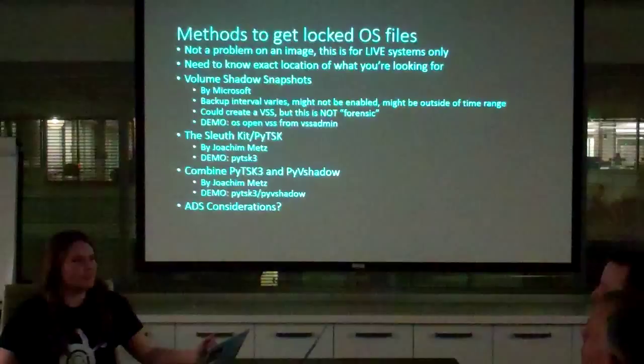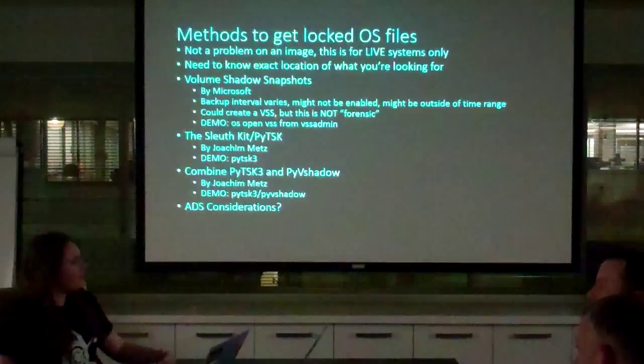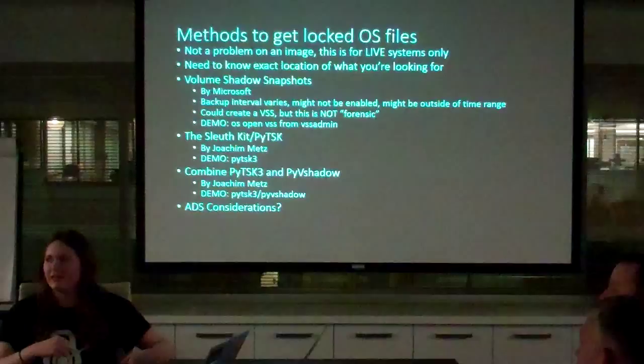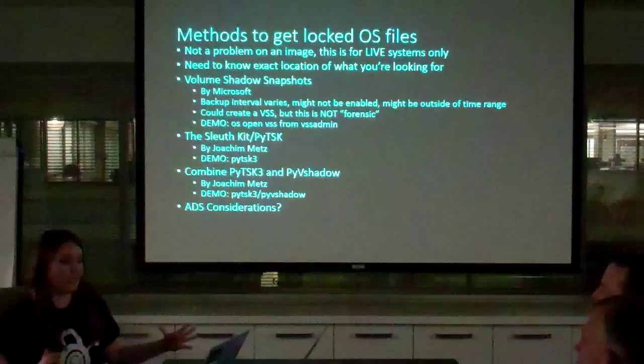I'll show you how to force it to make one. It's not forensic to create a volume shadow snapshot right now — if I wanted to know what the master file table looks like right now, I could create one and then export that file, but why is that a little janky? Making a restore point is a big change on the system, so I don't encourage you to do this, but I felt I should talk about it just because we can.